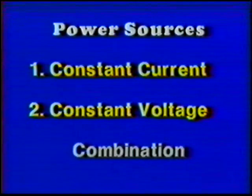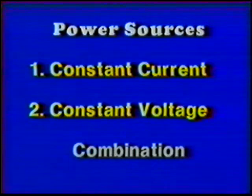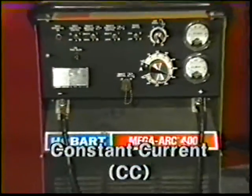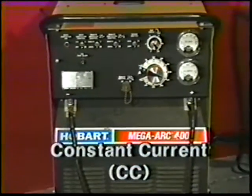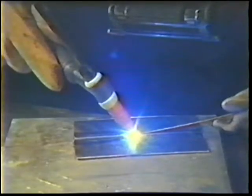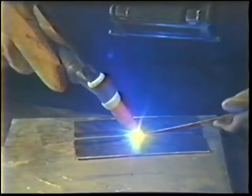Combination machines exist that offer both constant current and constant voltage, but these are not as common. The constant current power source is the one used for shielded metal arc welding. It is also used for other welding processes such as gas tungsten arc.